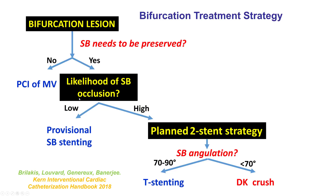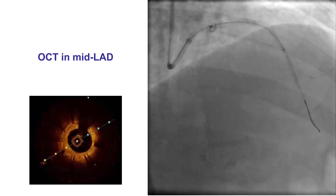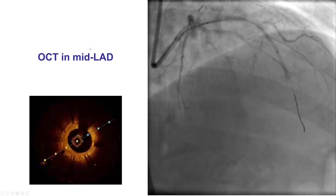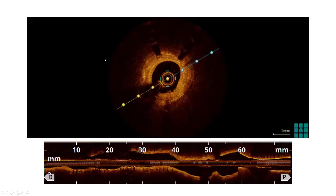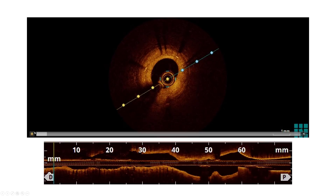In this particular case, there was some disease in the diagonal ostium, but we thought it was unlikely to lose it because the lesion did not appear significant angiographically. Therefore, we decided to do a provisional approach. We did balloon inflation in the proximal vessel, and then after wiring the diagonal branch, we performed OCT.